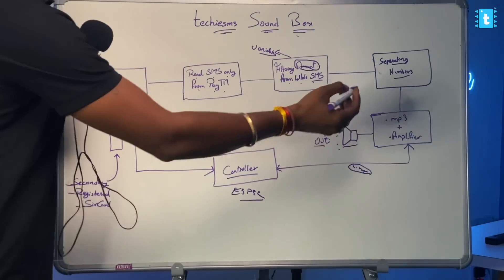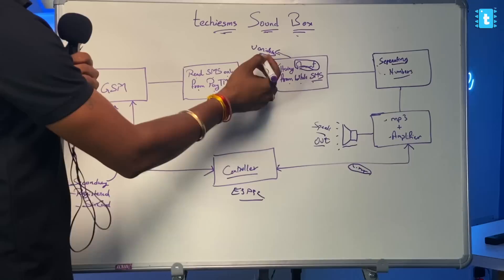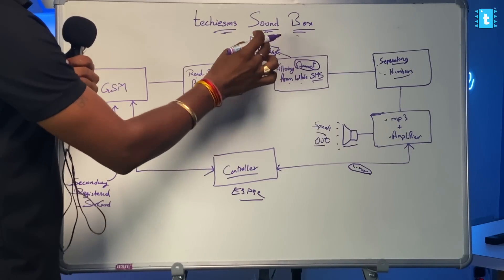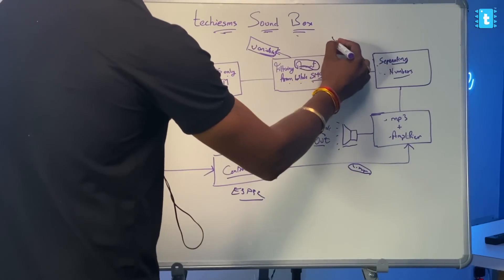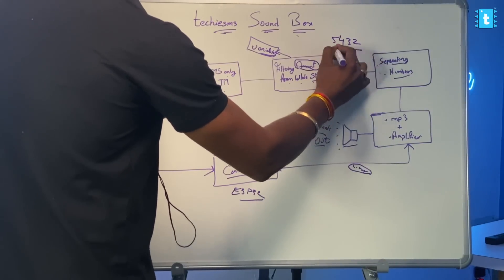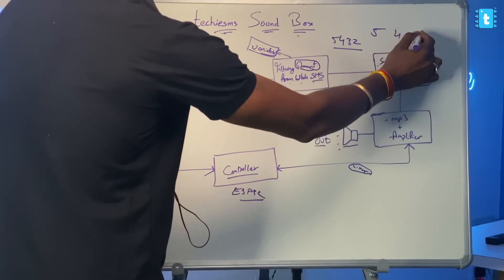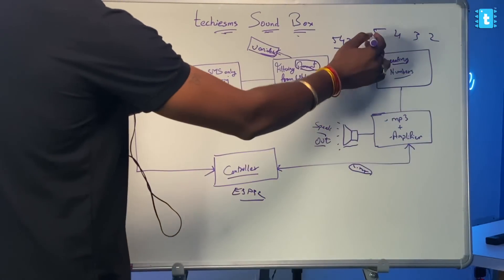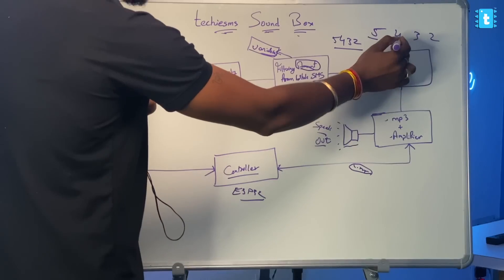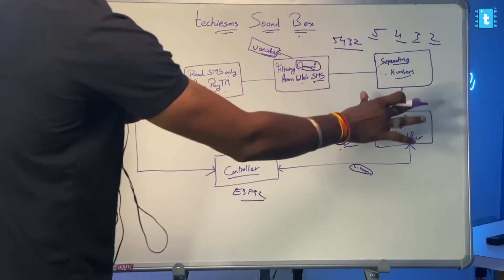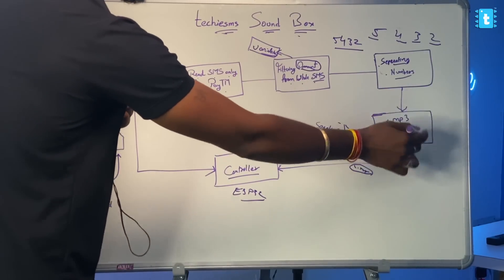So that's how we can reduce the number of recordings to just 29 to cover amounts up to 99,999. We added a new block called 'separating number.' As soon as we receive the amount stored in the variable — for example, if the amount is 5,432 — we separate those numbers as 5, 4, 3, and 2, and then speak them out separately as 5,000, 400, 30, and 2. All the separate numbers are spoken by the MP3 player, and this is how we know how much payment we have received via the Paytm QR code, using our own Techie SMS Soundbox.